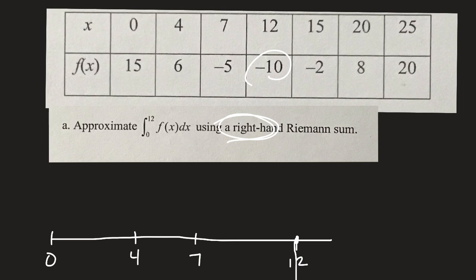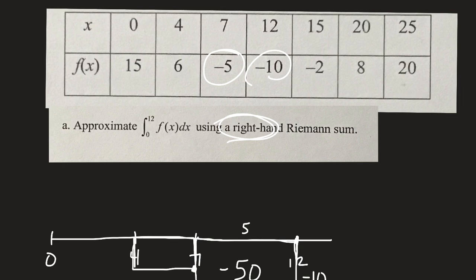We make our first rectangle from x = 7 to x = 12, with height negative 10 and width 5 — giving an area of negative 50. Then at x = 7, the y-value is negative 5. We draw the next rectangle from x = 4 to x = 7, with height negative 5 and width 3 — giving an area of negative 15.